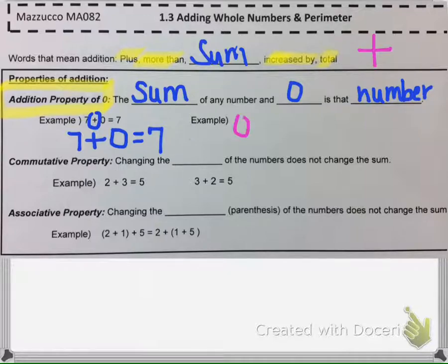For example, if we have nothing and then we add five to it, it's still five. And that also works with variables. If we have x and we add zero to it, it's still x.